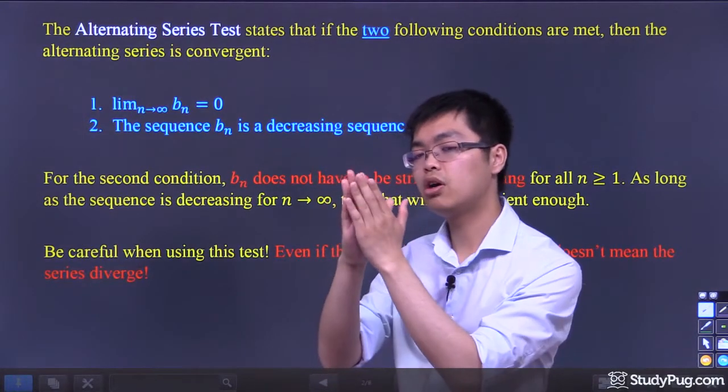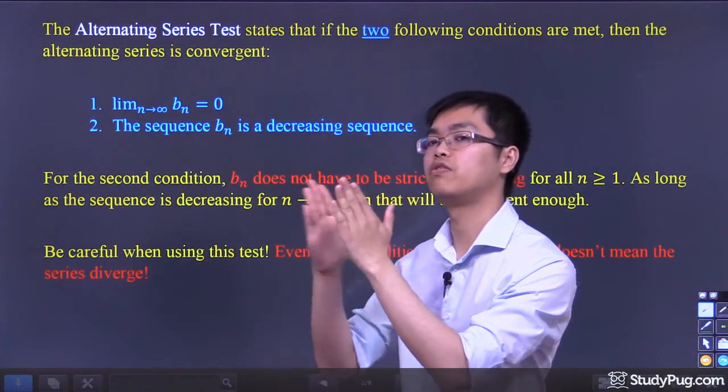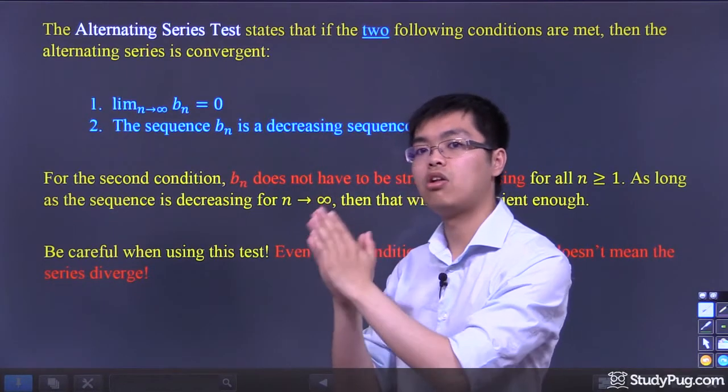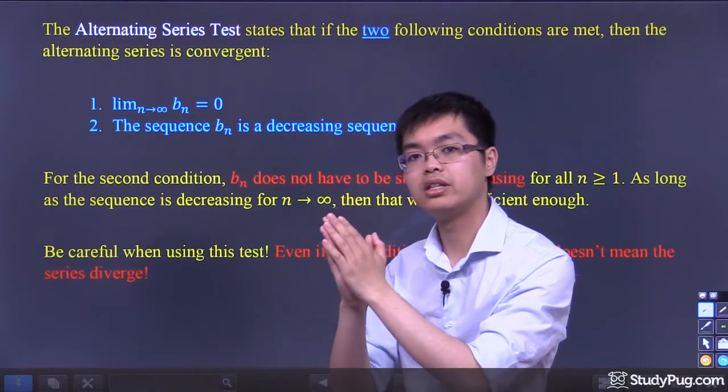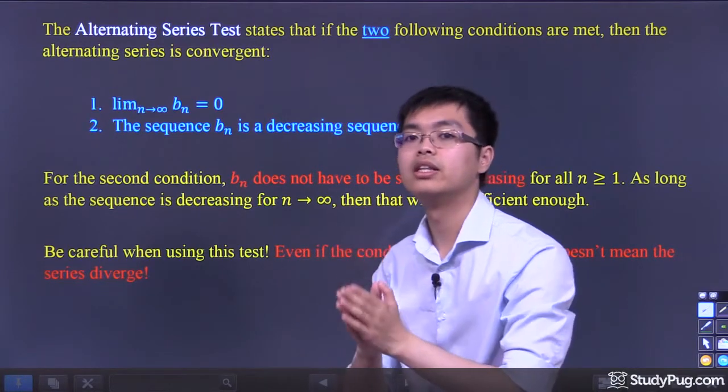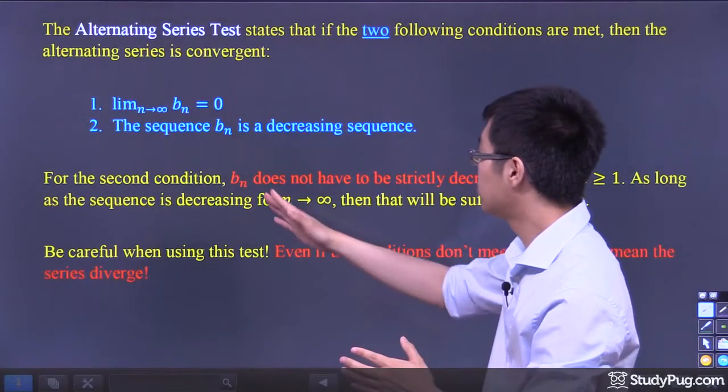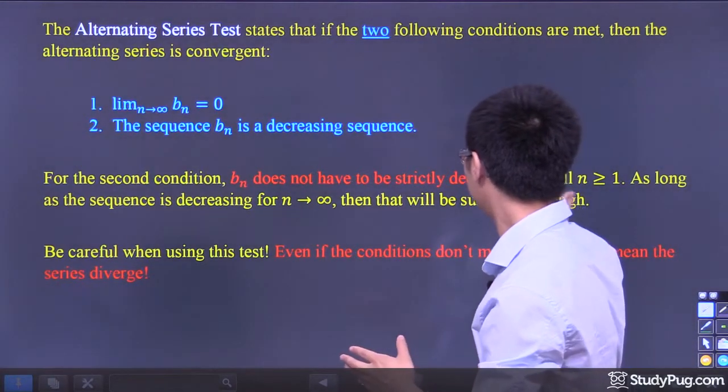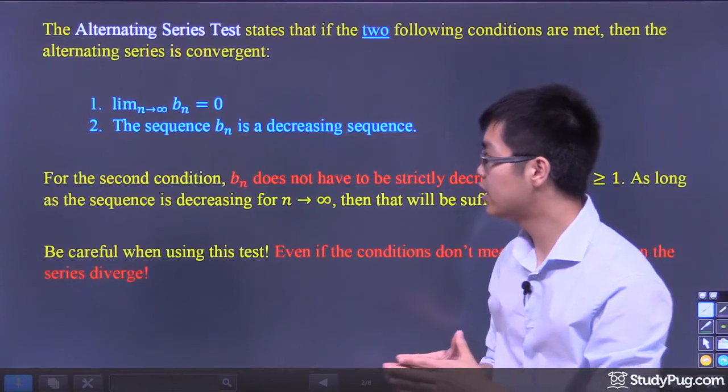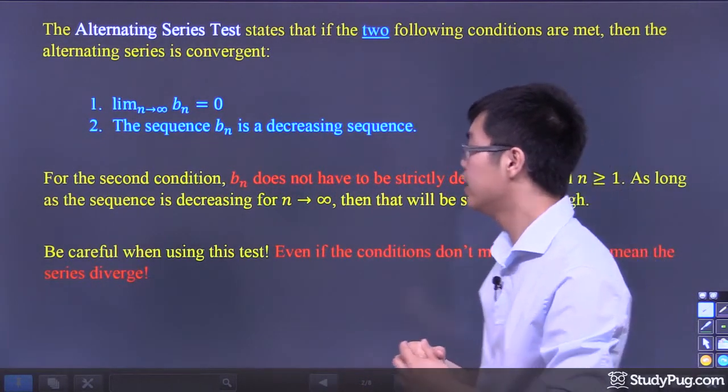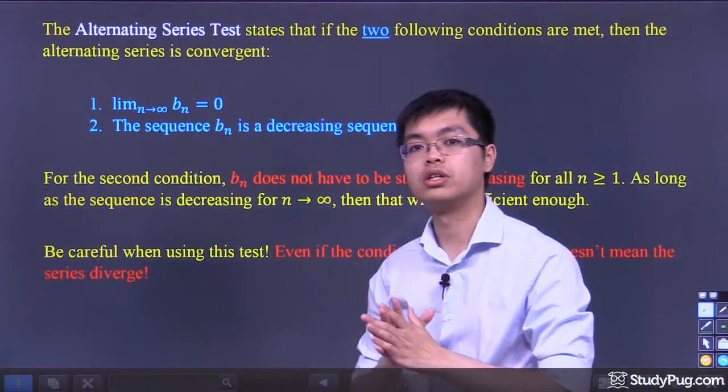It's acceptable to say that this is a decreasing sequence. So it doesn't have to decrease always strictly from n equals one to infinity. We just have to know that as long as in the long term, as n goes to infinity, the sequence decreases, then we're good to go. It's sufficient enough to say that this is a decreasing sequence as long as n goes to infinity, and those are the two conditions.